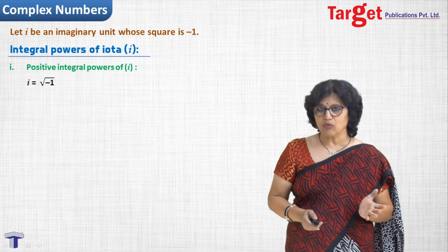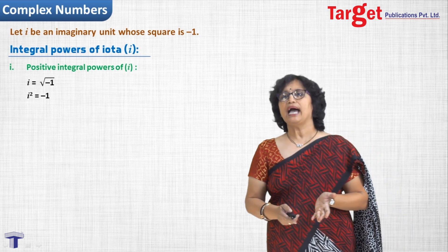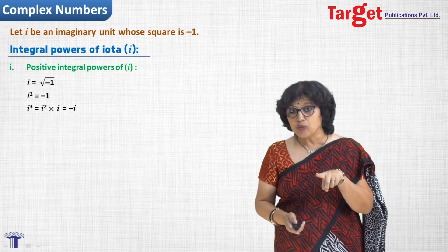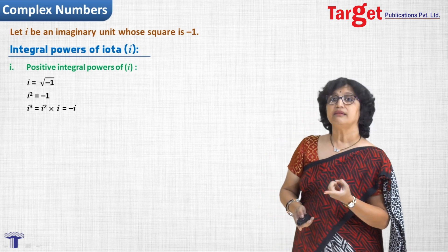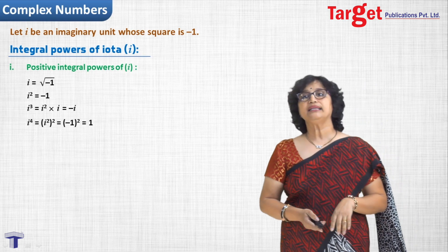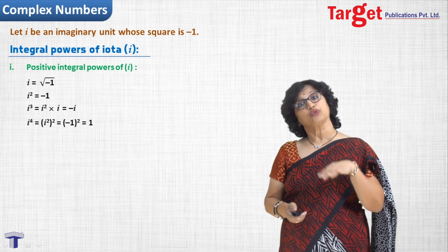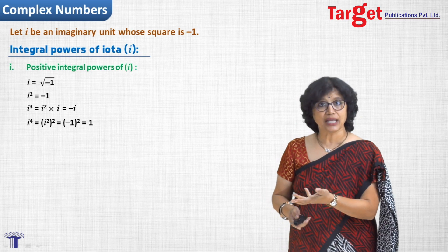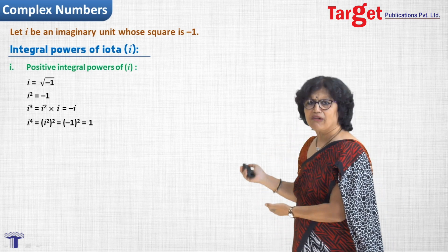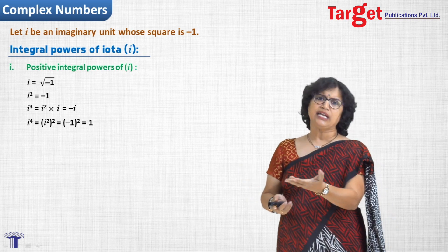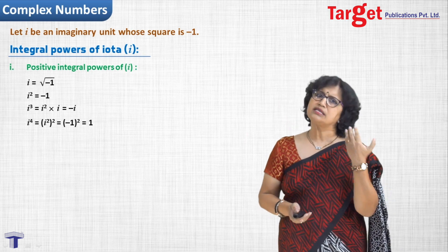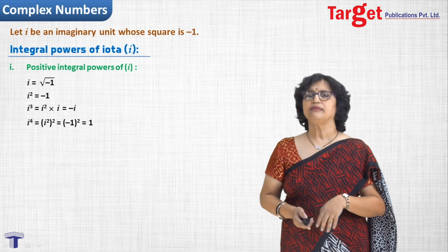I start with i equal to under root of minus 1, then i squared equals minus 1. For i cubed, I write it as i squared times i, replace i squared by minus 1, so the answer is minus i. Then i to the fourth is i squared whole squared; substituting minus 1 gives plus 1. For i to the 5th and further powers, you can use any of these combinations to find the answer.